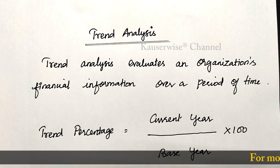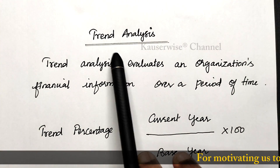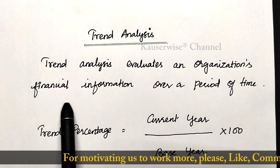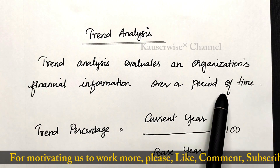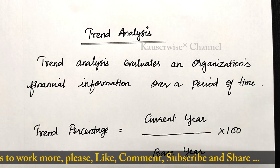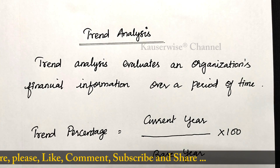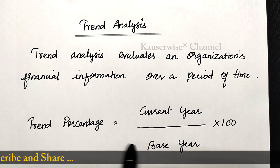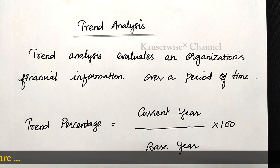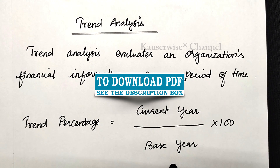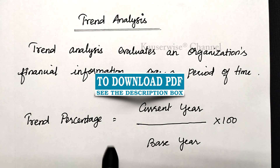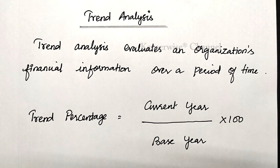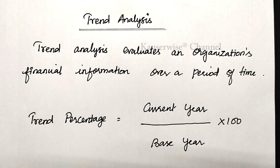Before we see the numerical problem, let us understand the meaning of trend analysis. Trend analysis evaluates an organization's financial information over a period of time. It is often used to evaluate each line item on the income statement as well as the balance sheet. There is a formula to find out trend percentage: the formula is current year data divided by base year data, into 100. This trend percentage is applicable for each and every item of the income statement as well as balance sheet.